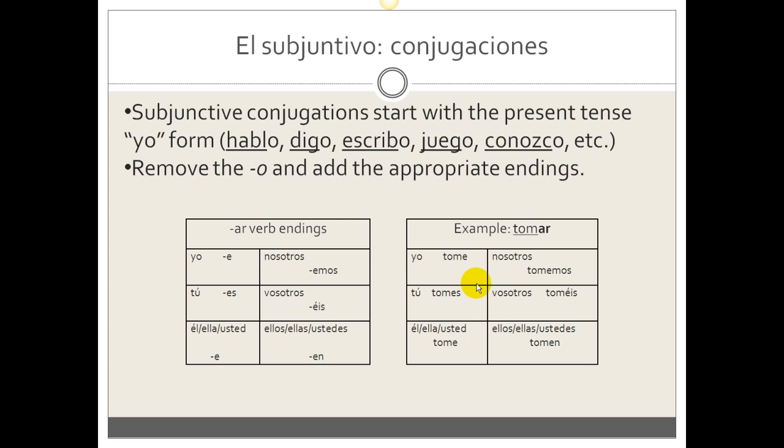So right now in this lesson, it's kind of an overview, just a brief introduction to the subjunctive, but there will be more instruction about it in the future. Back to the conjugations. The subjunctive conjugations start with the present tense yo form, similar to what you saw when you were learning the command forms.